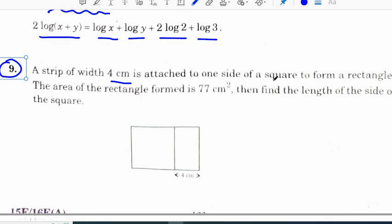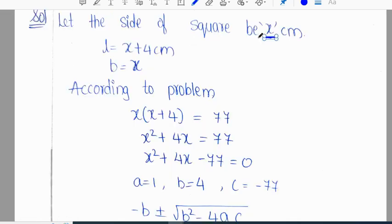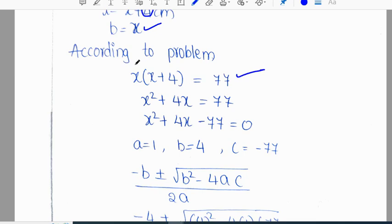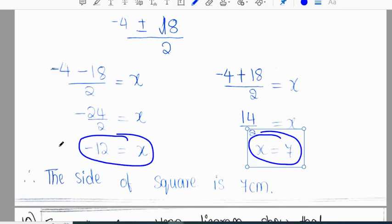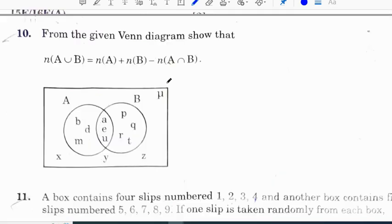A strip of width 4 centimeters is attached to one side of a square to form a rectangle. The area of rectangle is 77 cm². Find the length of the side of the square. Let the side of square be x centimeters. Length will be x + 4, breadth will be x. According to the problem, x(x + 4) = 77. So x² + 4x = 77, giving x² + 4x - 77 = 0. Solving the quadratic equation, we get x = 7 or x = -12. As side cannot be negative, the side of the square is 7 centimeters. This is a very important expected problem.